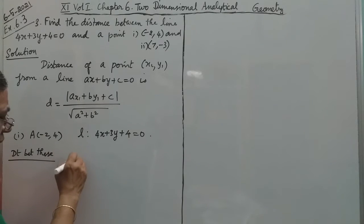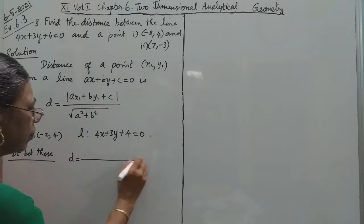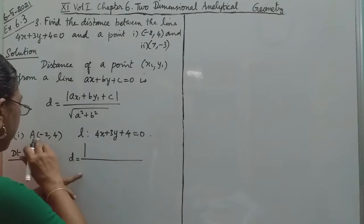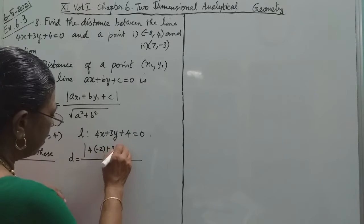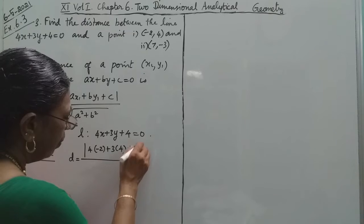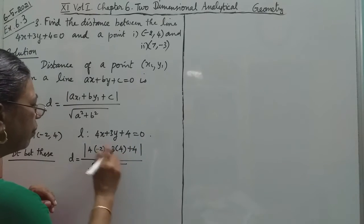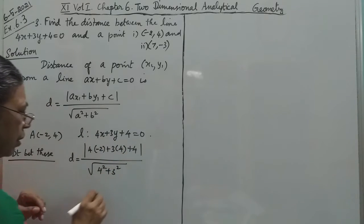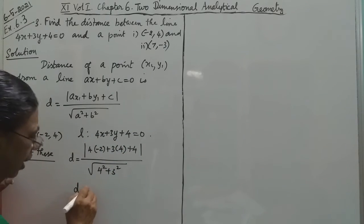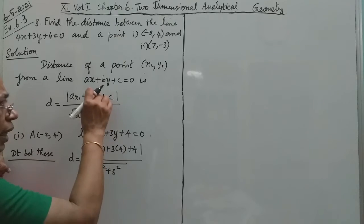Distance D equals modulus of 4 times minus 2 plus 3 times 4 plus 4, divided by the square root of 4 squared plus 3 squared.